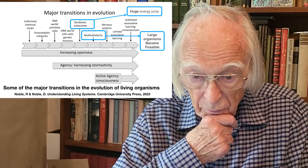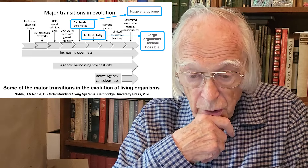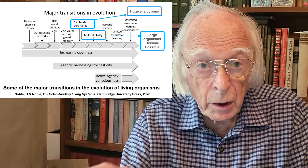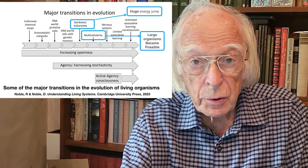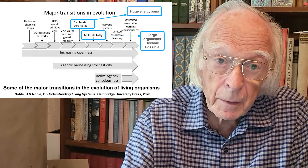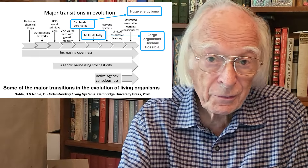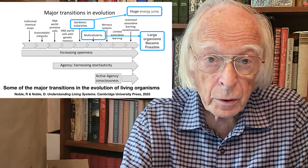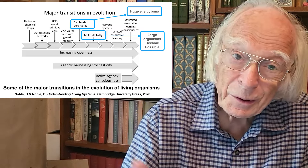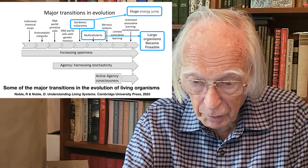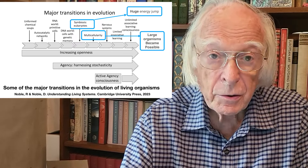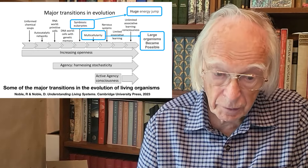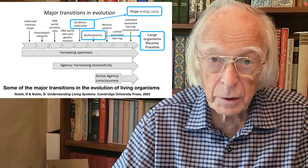I'll quickly go through the remaining major transitions, though I won't talk about those much today. There was the transition to nervous systems to enable control of larger organisms, leading to two kinds of learning: simple associative learning — even bacteria can work out where their food is by association with chemical compounds — and then to consciousness in organisms like us, the peacock, the octopus. That produced active agency in living organisms. The key thing in today's talk is the symbiogenetic event that led to the huge energy jump that enabled us to exist.